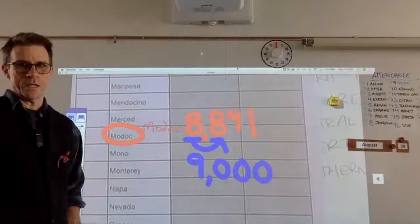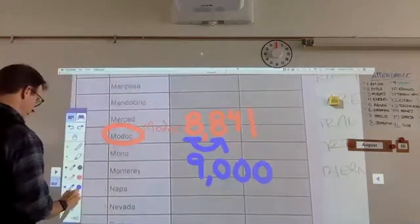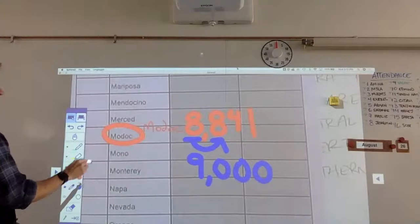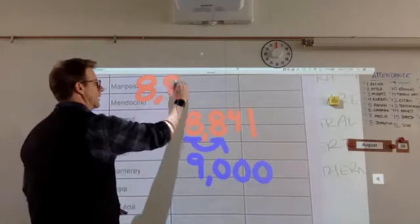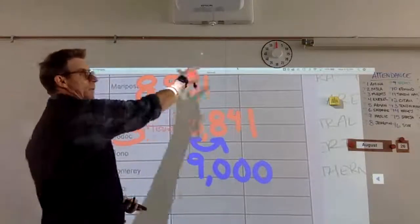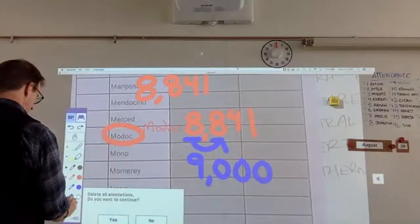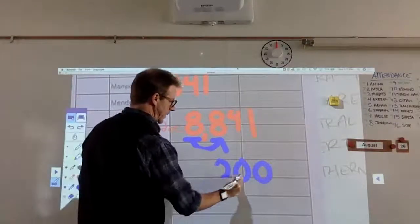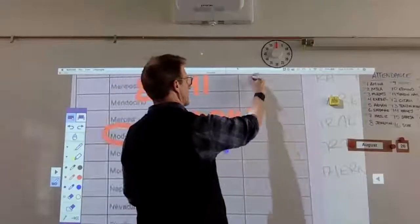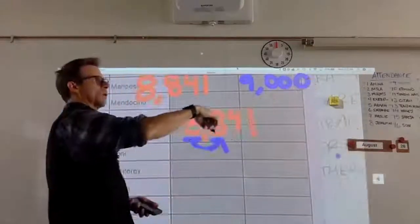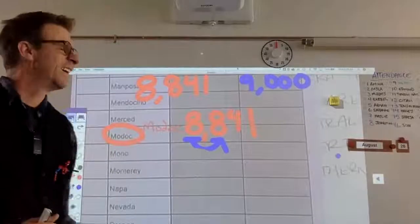So, the way I envision this was, you would write, let's say we have 8,841, and that would be the number you put in the population. And then next to it, you would put this number, 9,000. You would put that. So, I'm going to put this 9,000. I'm going to put that in this spot. So, 9,000, and hopefully, when you do this at home, you don't have a big marker like that.